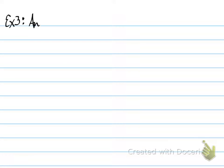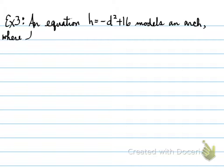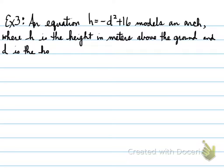Example number 3. An equation, h equals negative d squared plus 16, models an arch where h is the height in meters above the ground, and d is the horizontal distance from the center of the arch.